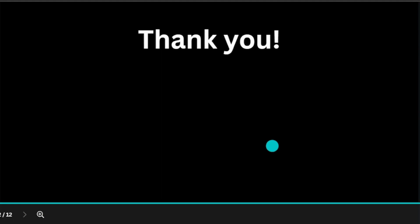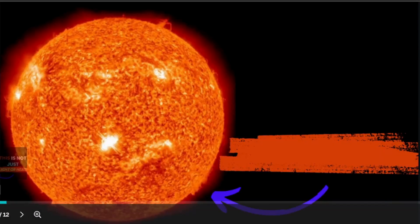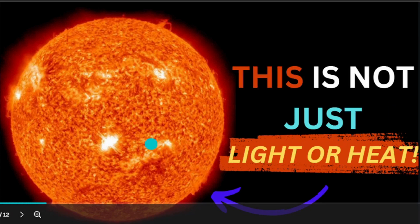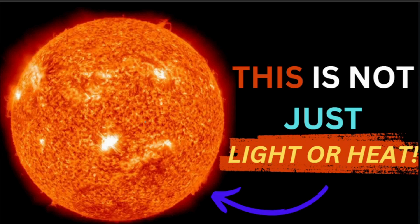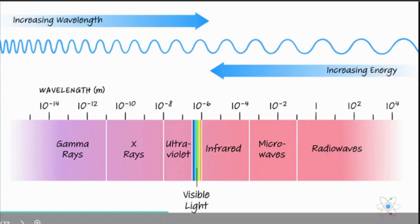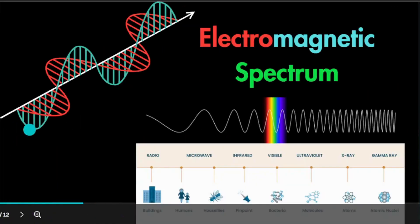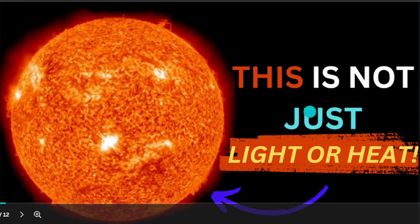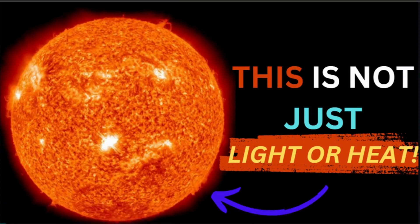Thank you for watching this video till the end. I will be meeting you in my next video. Before going, I have given you this: this is not just light or heat, then what is this? Write in the comment box. This is all spectrum, all of them are emitted by the sun. That is why on the thumbnail I have written this is not just light or heat, this is electromagnetic spectrum and electric waves. Thank you for watching, bye bye.